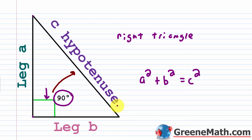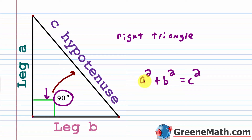The Pythagorean formula works like this: you take the measure of leg a, square it, then add the measure of leg b squared. So a squared plus b squared equals c — the hypotenuse — squared. This is true for any right triangle you work with.